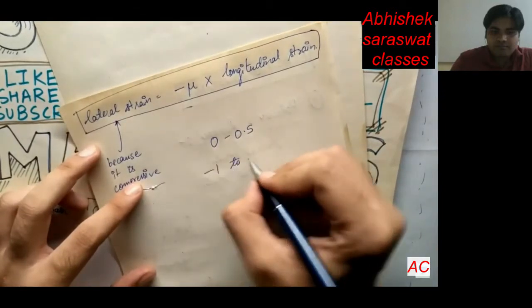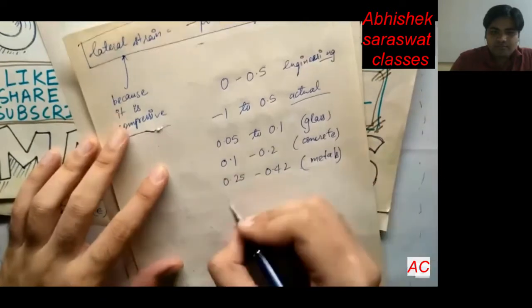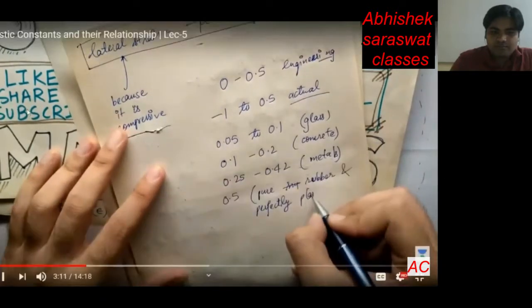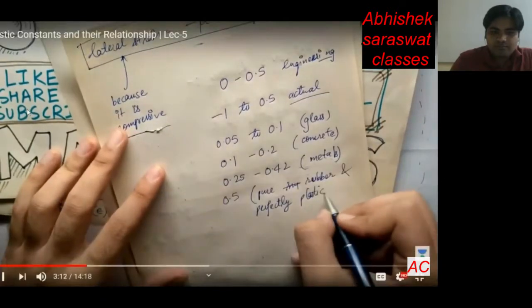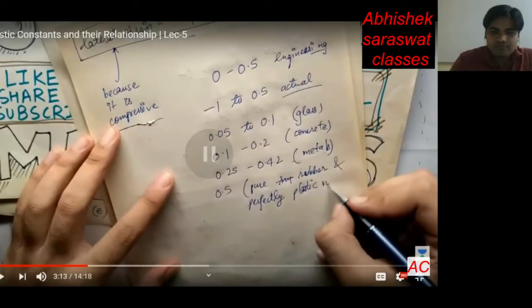Typical values of Poisson's ratio by material: for glass it is 0.05 to 0.1, for concrete it is 0.1 to 0.2, for metals it is 0.25 to 0.42, and for pure rubber and perfectly plastic materials it is 0.5.